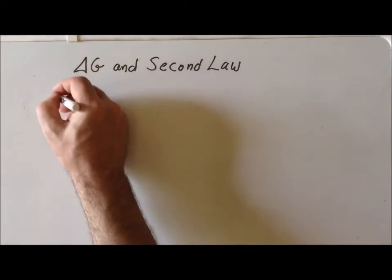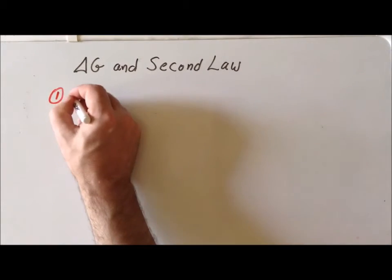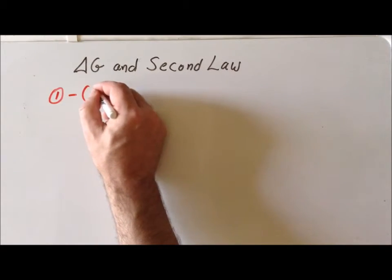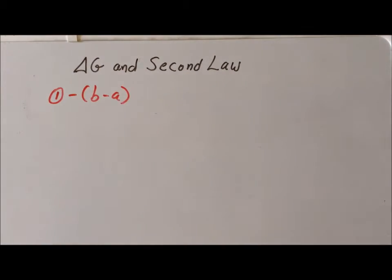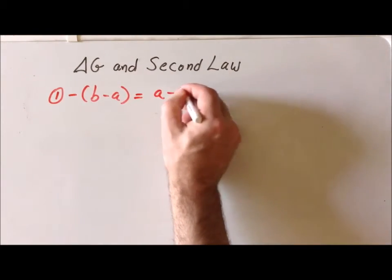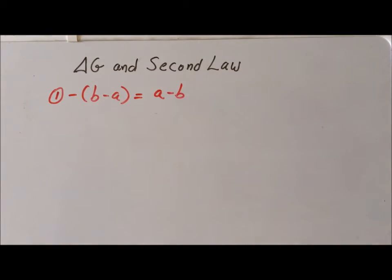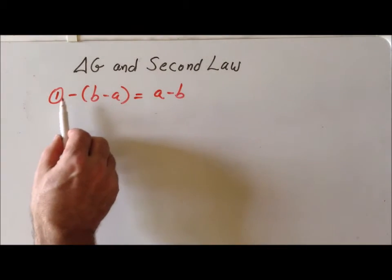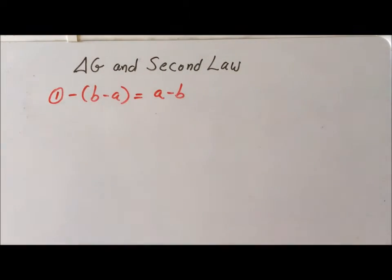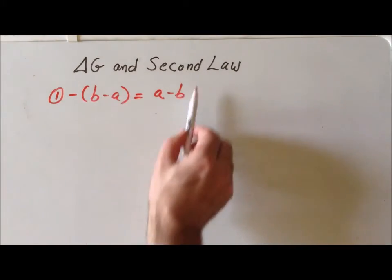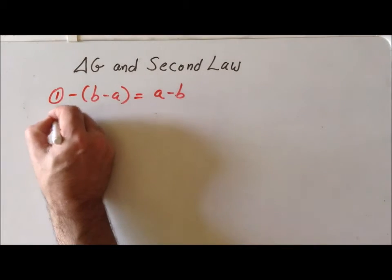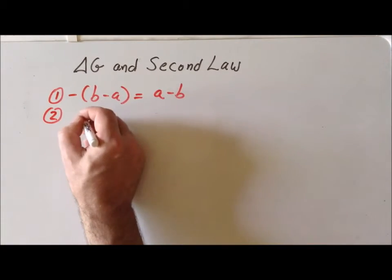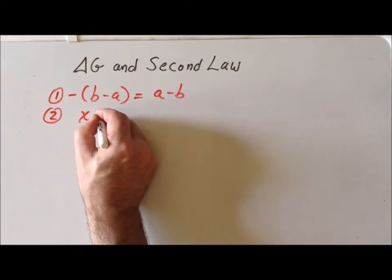The first part that might be tricky is that if we take the negative of a difference, so we have a quantity B minus A, and we take its negative, what we end up getting is A minus B. And we can prove this for ourselves if we, using a distributive law, treat the minus sign in front as a minus one, and multiply through, we see that we do get A minus B.